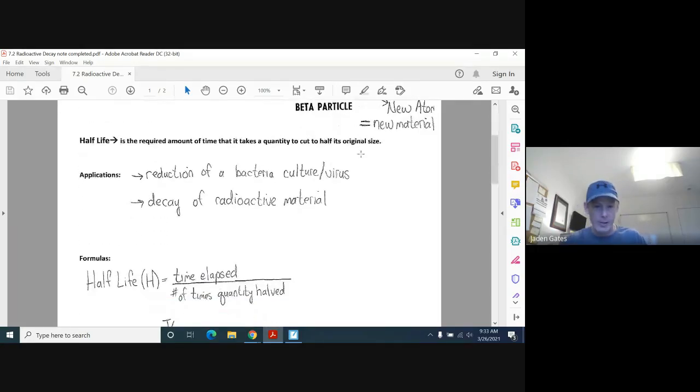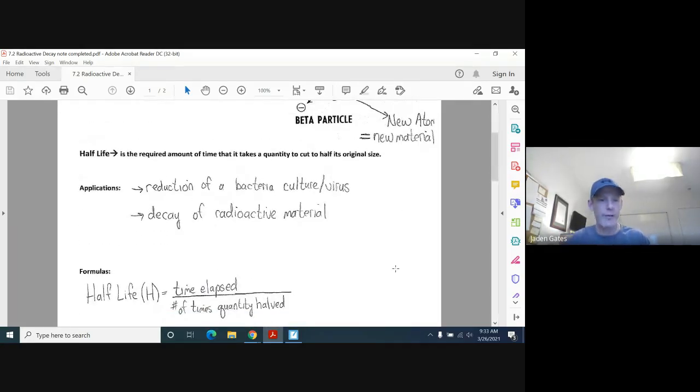Now we have a couple of formulas. The first formula here is about half-life, which is, I use a big capital H here for half-life. It's this nice, simple formula where you have how much time has gone by. So your time elapsed is divided by the number of times the quantity actually cut in half.